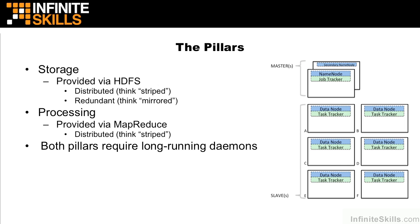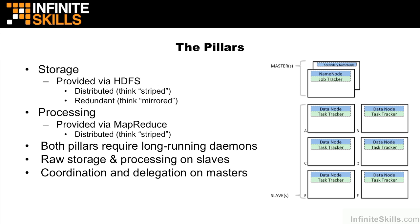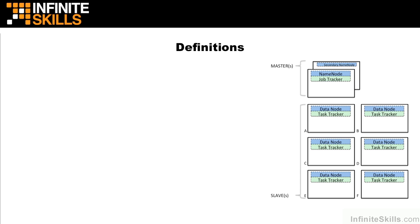Each of these pillars requires several long-running daemons on the master and slave side. Just remember that the raw storage and processing occurs on the slaves, and the coordination and delegation occurs on the masters. Before we dig into more details about this chapter, let's get several definitions out of the way.